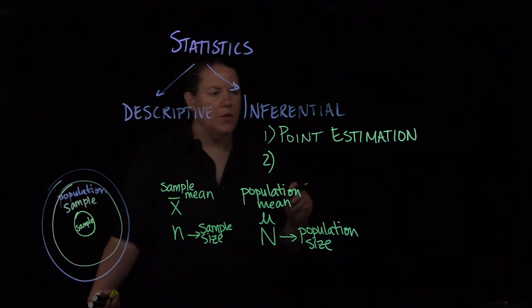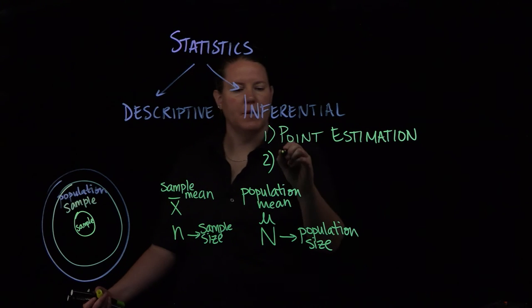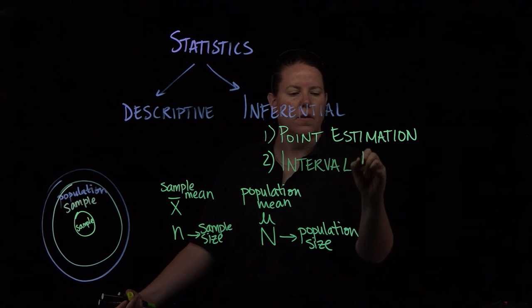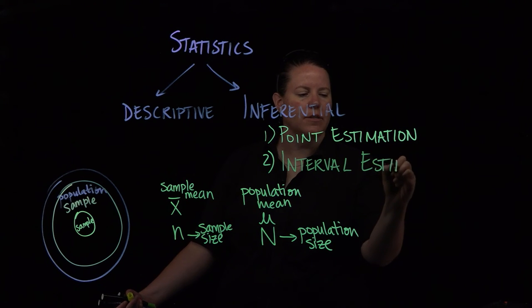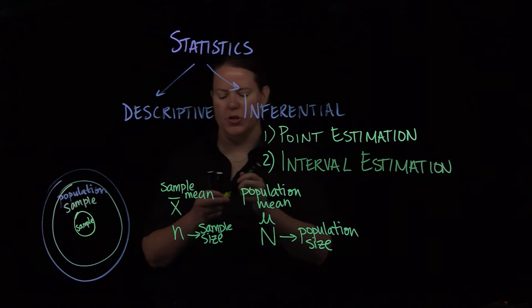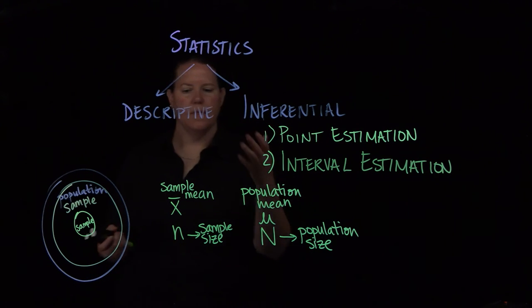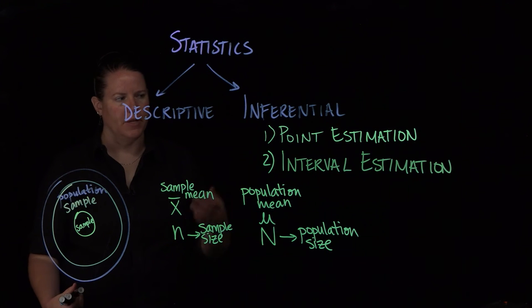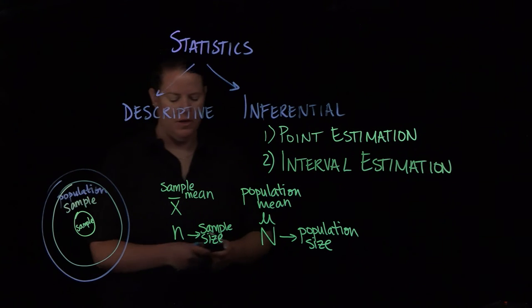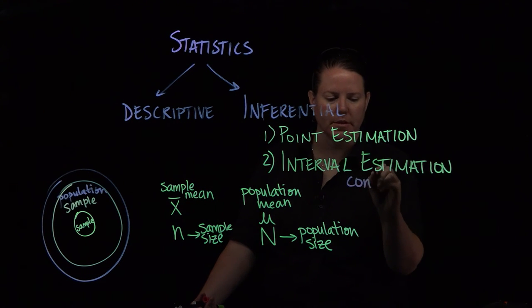There's point estimation. There is the joy of interval estimation. What is interval estimation? Interval estimation is starting to hedge our bets a little bit. So instead of saying that the sample works for 100% of the population, we start to say, well, we think this works for 90% of the population. So we have confidence intervals. This is where confidence intervals come in.